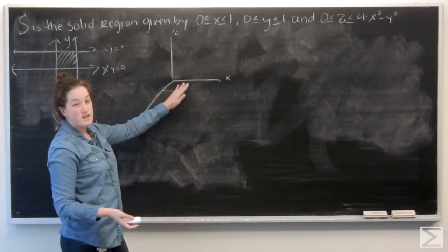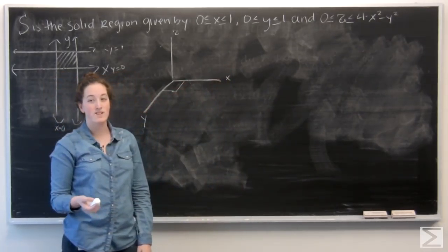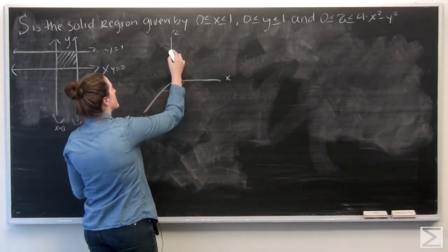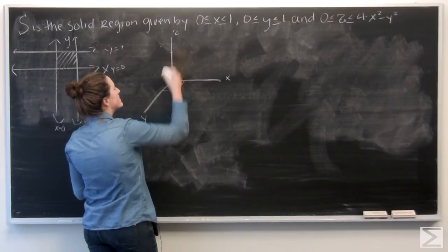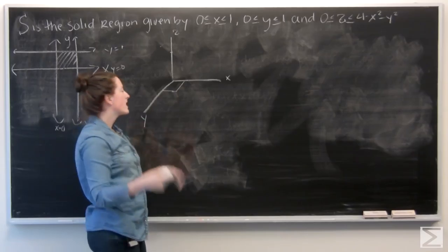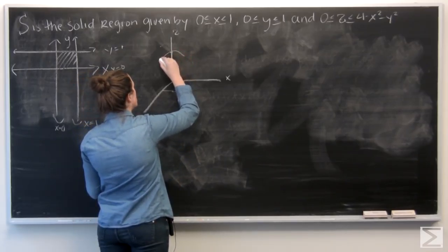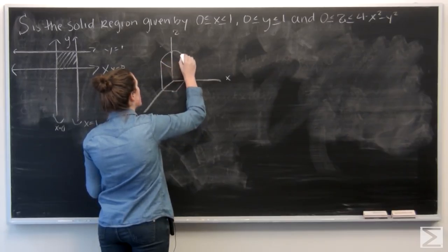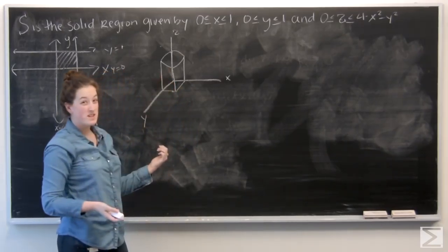So this square is actually the bottom. And then the upper bound is 4 minus x squared minus y squared, which is like an upside-down paraboloid. So it has a maximum height on the z-axis at 4. And then it just kind of goes down, kind of like an upside-down bowl.